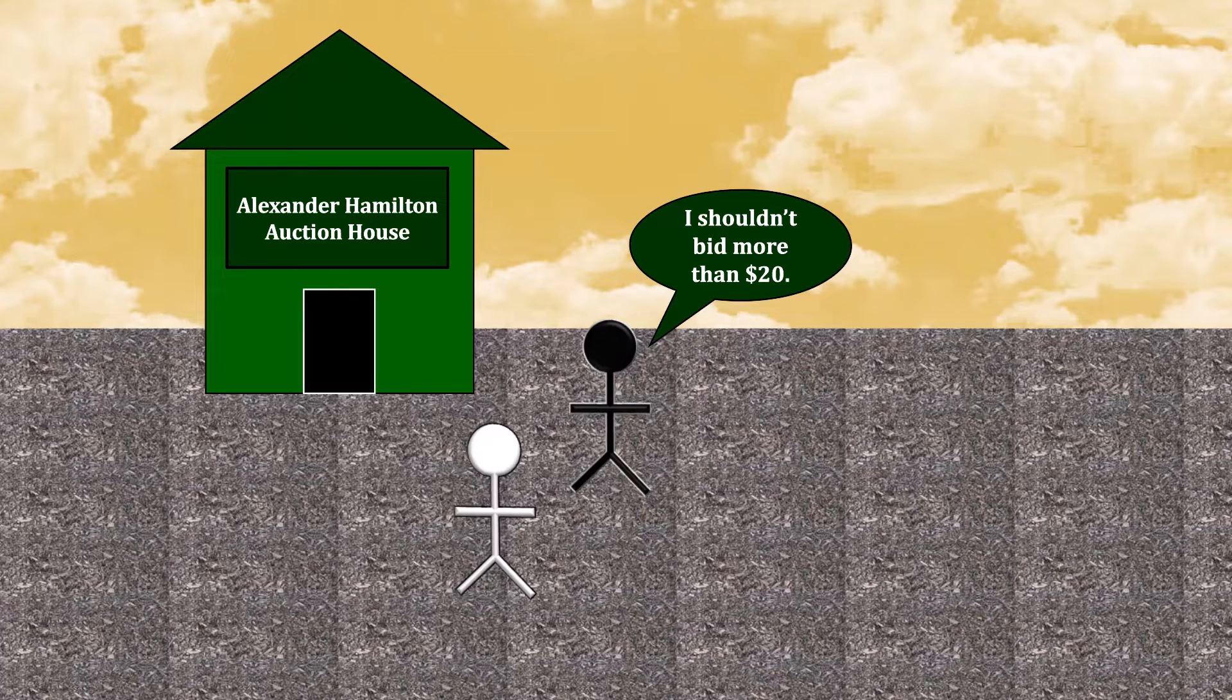Although you have a higher valuation for the book, you should draw that same conclusion. $28 is still less than $30. As a result, bidding any more than $20 can only bring about a negative payoff and can never deliver a positive payoff.